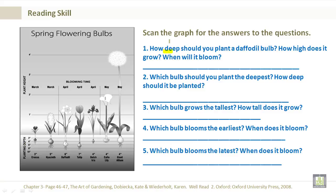How deep should you plant a daffodil bulb, how high does it grow, and when will it bloom? Here is a daffodil bulb. You should plant it at least six inches deep. It will grow one to two feet — you can see that in between here. And it will bloom in April.